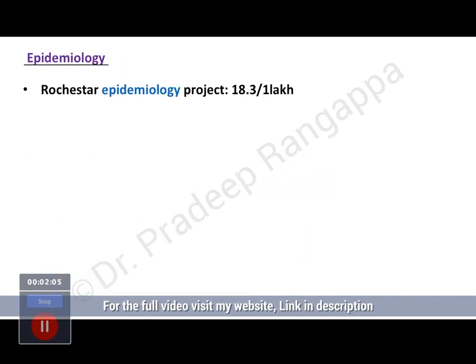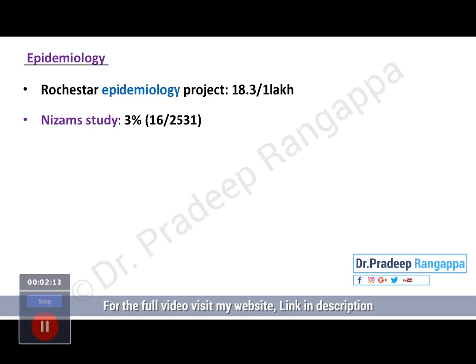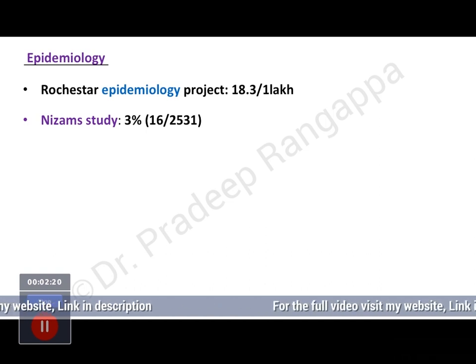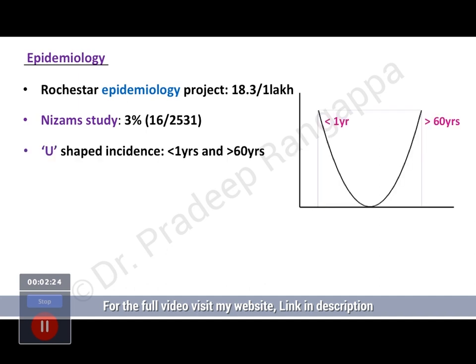Looking at epidemiology, the Rochester Epidemiology Project from the US puts the occurrence rate of status epilepticus at 18.3 per 1 lakh population. For Indian data, the Nizam study showed an occurrence rate of 3 percent — they surveyed 2,531 patients and around 16 of them had status epilepticus.